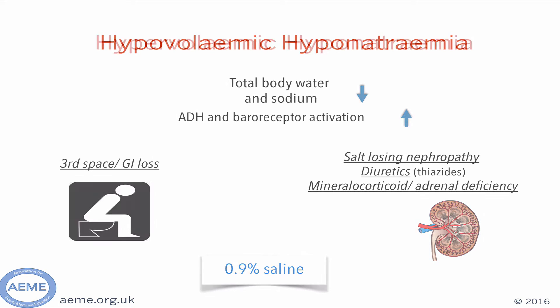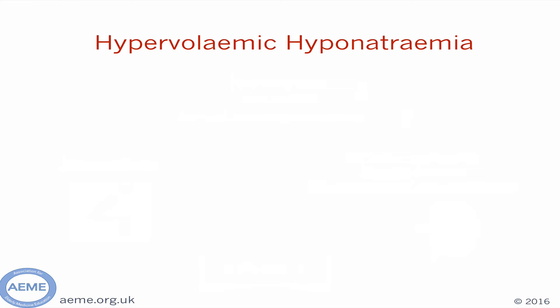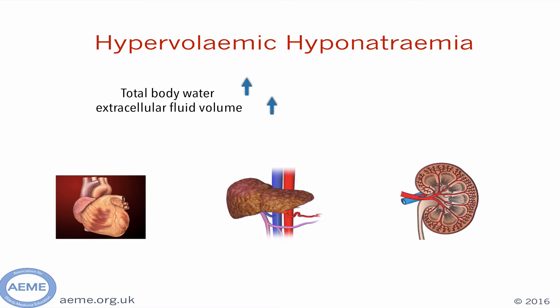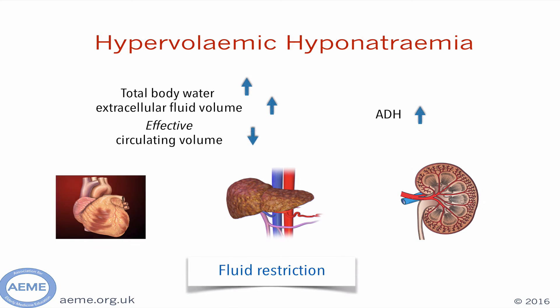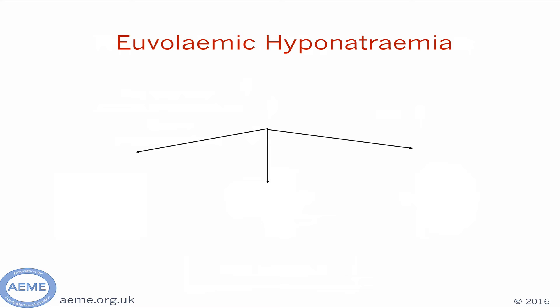The second is the hypervolemic hyponatremic patient, where total body water is increased, in particular the extracellular fluid volume. These patients may have an organ failure, in particular cardiac or liver failure. In these patients, cardiac output may be reduced, leading to a reduction in effective circulating intravascular volume, which is detected by the baroreceptors, causing a release of ADH in response to perceived low intravascular volume. This then leads to further retention of fluid. These patients may often need fluid restriction.